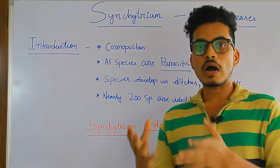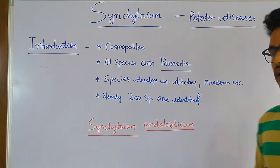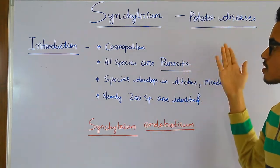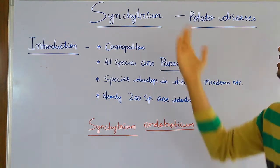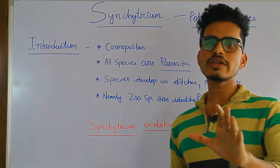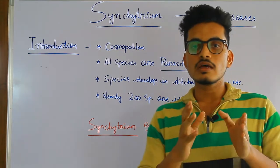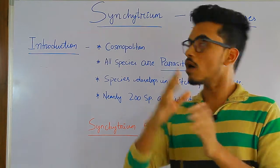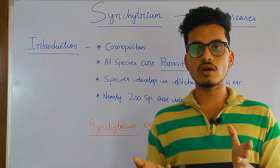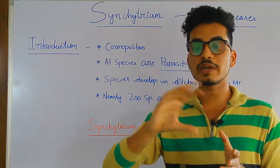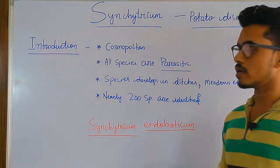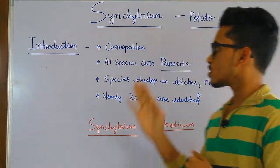We'll talk about Syncytium endobioticum later. Before that, let's discuss the introduction part. First point is cosmopolitan - meaning the species of Syncytium are present all over the world, spread throughout the world. That's why it's called cosmopolitan.